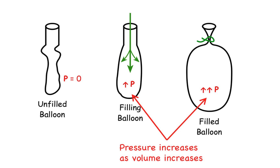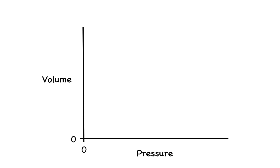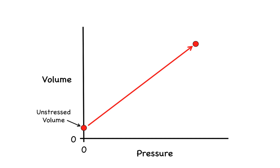If we were to plot this change in volume and pressure on a graph, we would see that the unfilled balloon will have an internal pressure of zero at some residual unstressed volume. When the balloon is inflated, both the volume and pressure inside the balloon increase. The ratio of the change in volume to the change in pressure, which is the slope of the line, represents the compliance of the balloon. This compliance is determined by the elastic properties of the wall of the balloon.